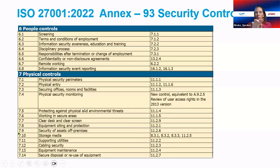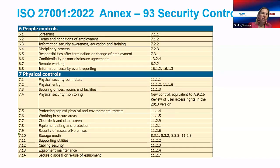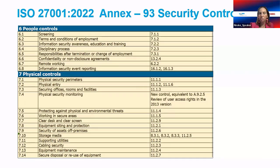When selling the concept of information security to the broader workforce, use real examples and case studies of where controls failed. For example, was there an actual breach because a clear desk and clear screen policy wasn't applied? Were controls actually activated in secure areas? Real case studies make these physical controls compelling selling points for your ISMS.